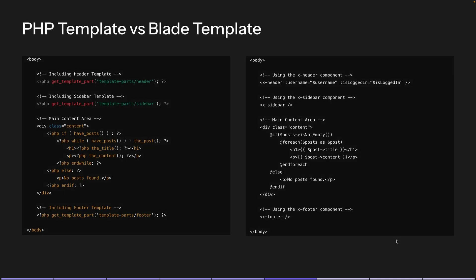Let's say you're using a WordPress PHP template — to include template parts like headers and sidebars, you have to use get_template_part. On the other hand, in Laravel Blade templates you can create components like header and sidebar, and just include them using x-header, x-sidebar, x-footer. You can easily pass props like username or is_logged_in, and you can even pass arrays — so all those benefits are included.